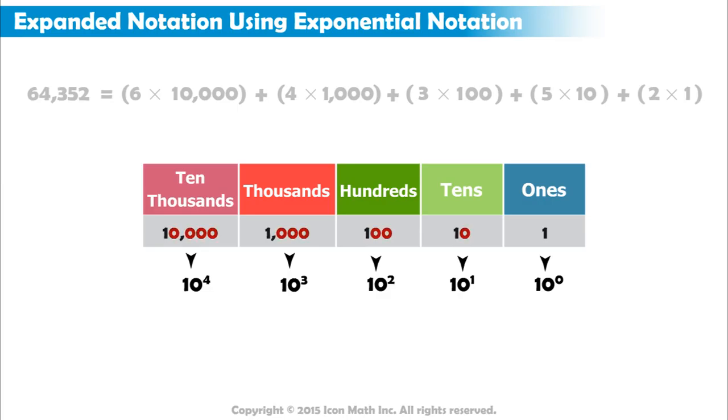You may also notice that the number of zeros is the same as the exponent. And notice how the value of the ones place does not have any zeros, so we have a zero in the exponent.